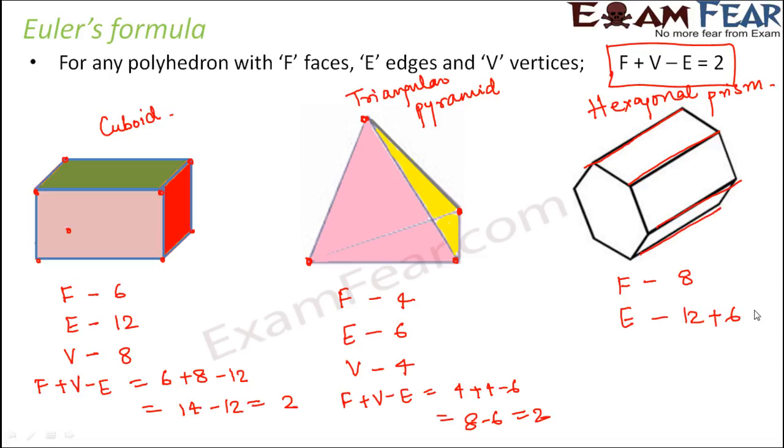And how many vertices? So 6 vertices of 1 hexagon again another 6 vertices of another hexagon that is 12 vertices.